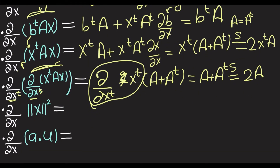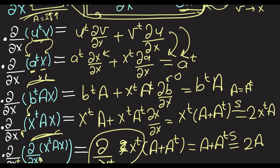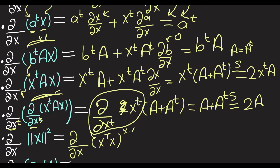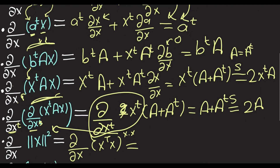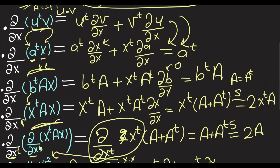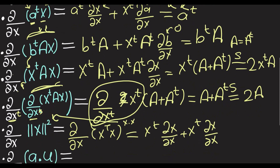How about ∂/∂x of the square of the magnitude of x? This is just ∂/∂x of x-transpose x, and even u-transpose v is just u dot v — here it's x dot x, which gives the square of the magnitude of x. This is just like the previous identity but with all u's and v's swapped for x, so we get x-transpose ∂x/∂x plus x-transpose ∂x/∂x, which yields 2x-transpose.